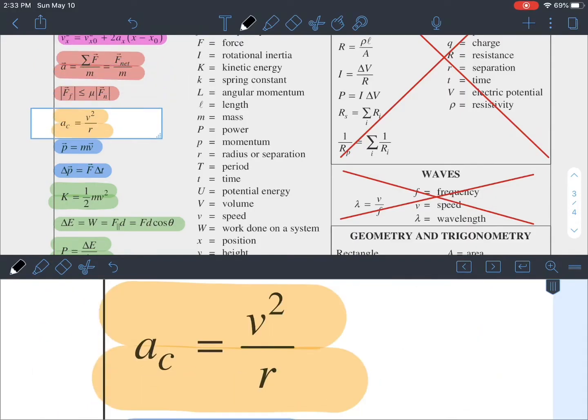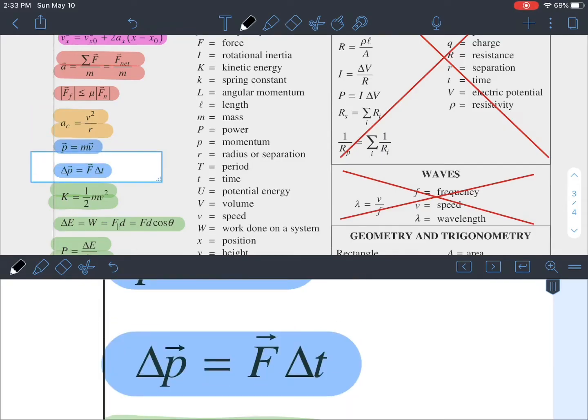In orange, this is going to be circular motion and gravitational motion. Here's your two momentum equations in blue. And don't forget that this one is also equal to j, which is impulse.